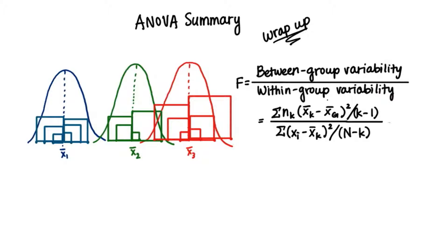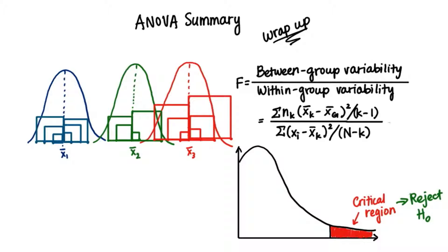There we have our F statistic. And if it falls out here in the critical region, past the F critical value, we'll reject the null. After making a statistical decision, we can use the multiple comparison test. One of which is Tukey's honestly significant difference, which is a value that if any two sample means have a difference greater than that value, they're considered honestly significantly different.